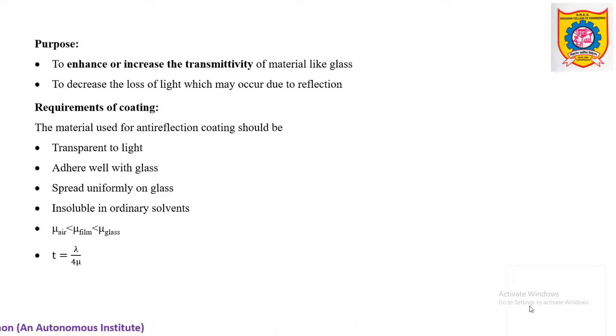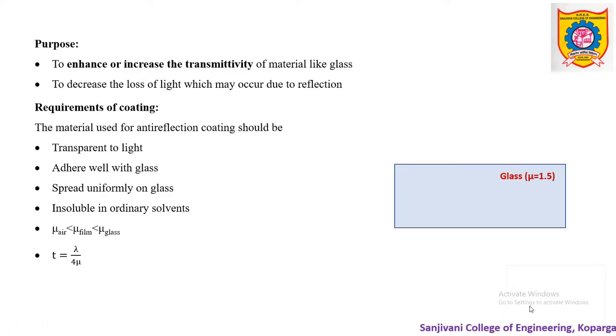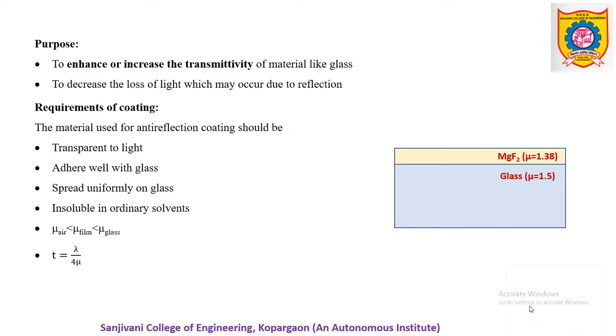Let us see how exactly it works from the physics point of view. Consider a glass slab which has refractive index about 1.5. It is coated with magnesium fluoride. Outside medium is air having refractive index 1. There are 3 media. Let us assume that light is falling on the upper surface of the film at which it will be partly reflected and partly refracted.